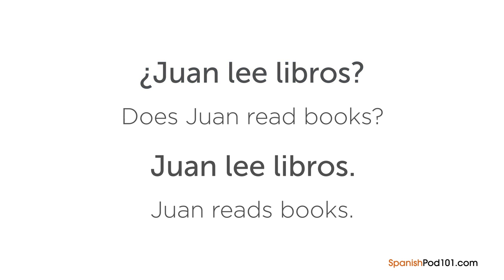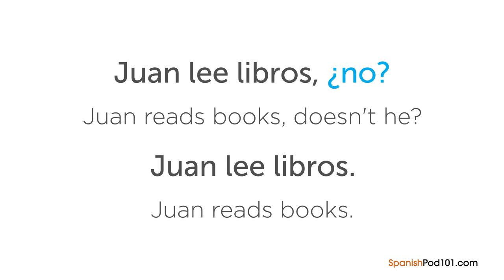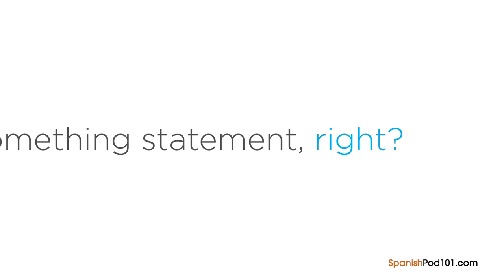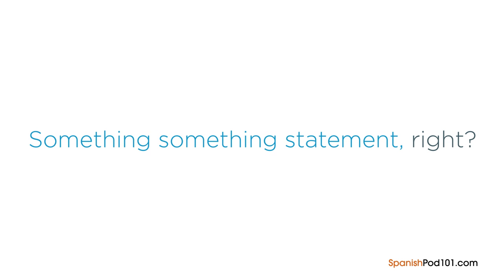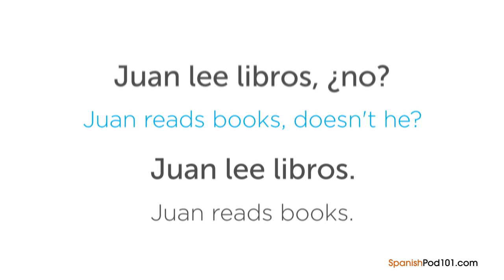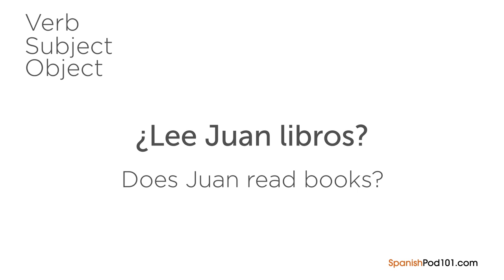Another simple way to turn a statement into a question is by adding a question tag at the end of a sentence. One question tag in English is 'right?' — 'something, right?' It works the same way in Spanish: 'Juan lee libros, ¿no?' meaning 'Juan reads books, doesn't he?' The final way is to actually switch the verb and the subject, making it VSO instead of SVO.